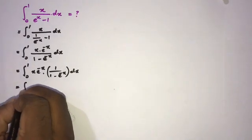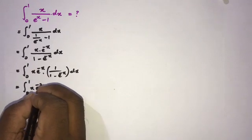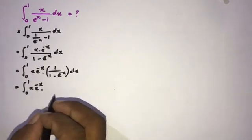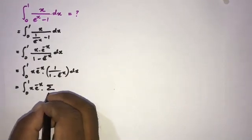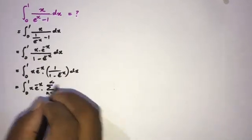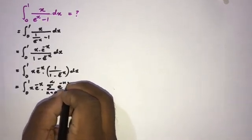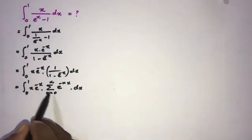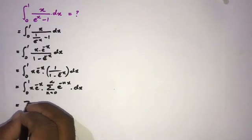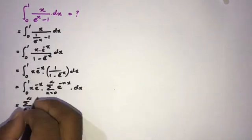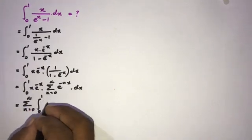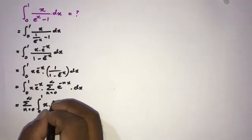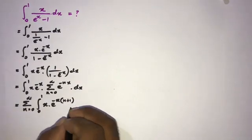Now we have the integral from 0 to 1 of x times e to the minus x times 1 over (1 minus e to the minus x) dx. Instead of 1 over (1 minus e to the minus x), I am going to use an infinite series expansion. We can write this as the sum from n equals 0 to infinity of e to the minus n x. So the integrand becomes x times e to the minus x times the sum of e to the minus n x, which gives e to the minus x(n plus 1) dx.